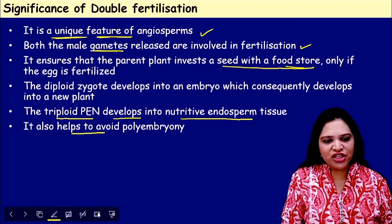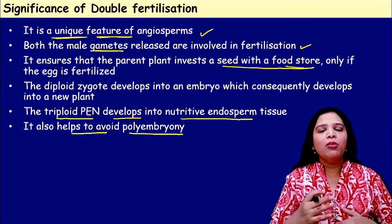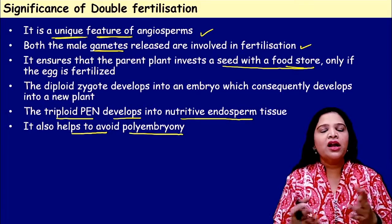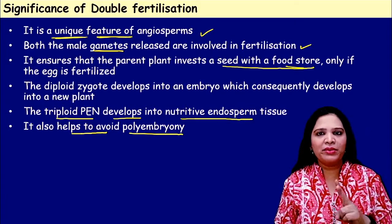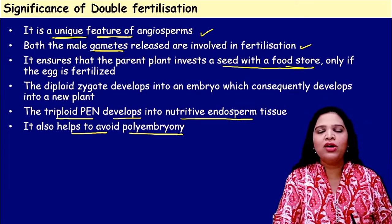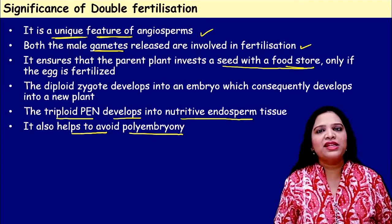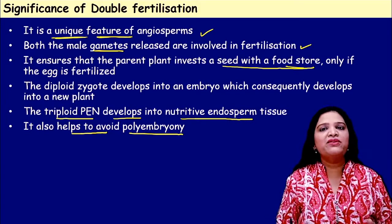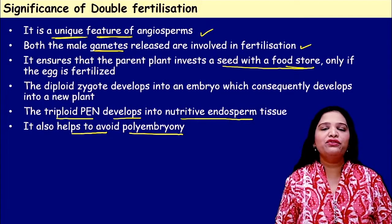Double fertilization also helps to avoid polyembryony — the formation of more than one embryo. The pollen tube brings two male gametes: one fuses with the egg and forms the embryo, and the other fuses with the polar nuclei to form the endosperm. There are no free male gametes left, so it prevents polyembryony. That is the significance of double fertilization.